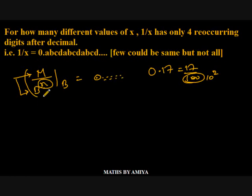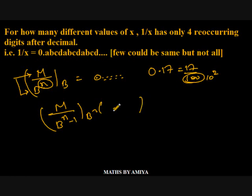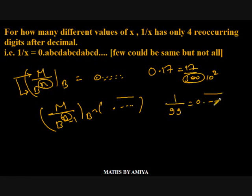In the same base b, if it is m divided by b raised to power n minus 1, then in that base system there would be n digits after the decimal in reoccurring form. We can say 1 upon 99 gives a two-digit reoccurring decimal, that is 0.01 reoccurring. What is the meaning of 99? In base 10, it is 10 squared minus 1 — the power is 2, so 2-digit reoccurring.